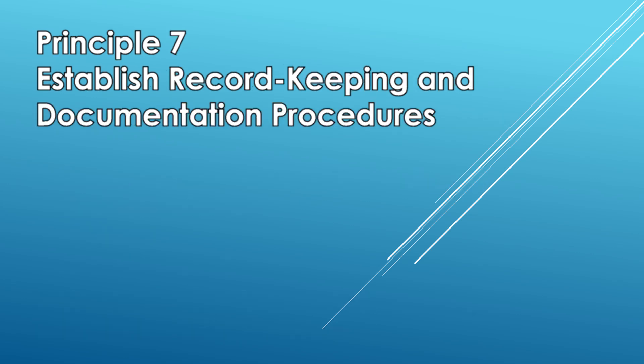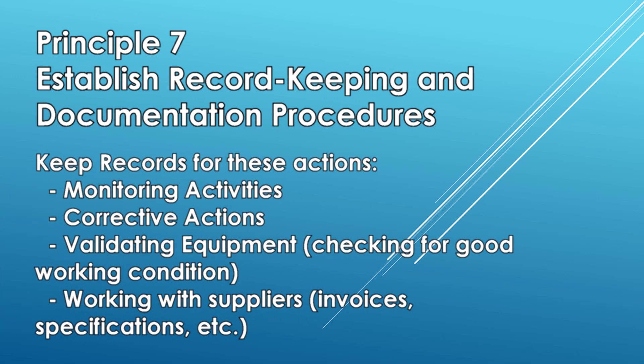Principle 7 — Establish documentation on procedures and records: these steps involve determining which records you need to keep in order to know which control points gave you more trouble than others and to show that the system is working as intended. Keep records for these actions: monitoring activities, corrective actions, validating equipment, and working with suppliers.